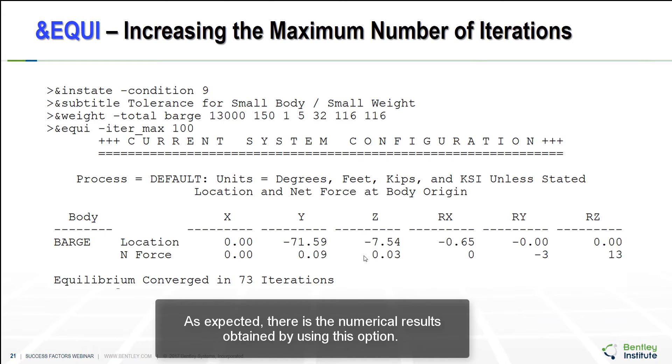As I expected there is the numerical result obtained by using this option. This time it took 73 iterations to converge. It's apparent that the convergence is much higher. The improvements are obtained not only in the maximum iteration by default setting but also in the next iteration but the computing times are considerably higher.